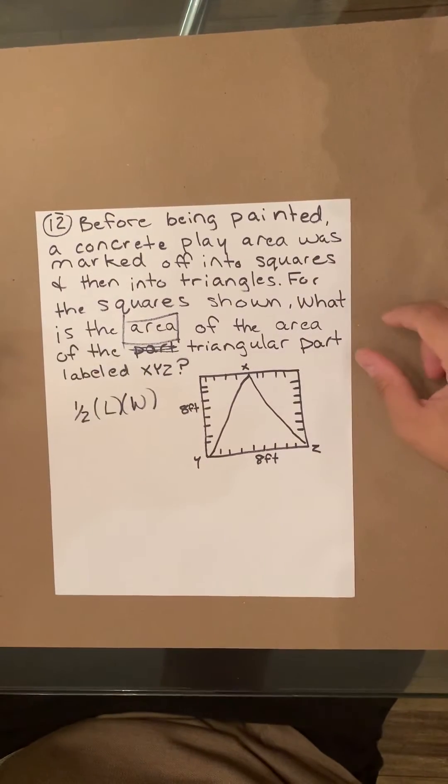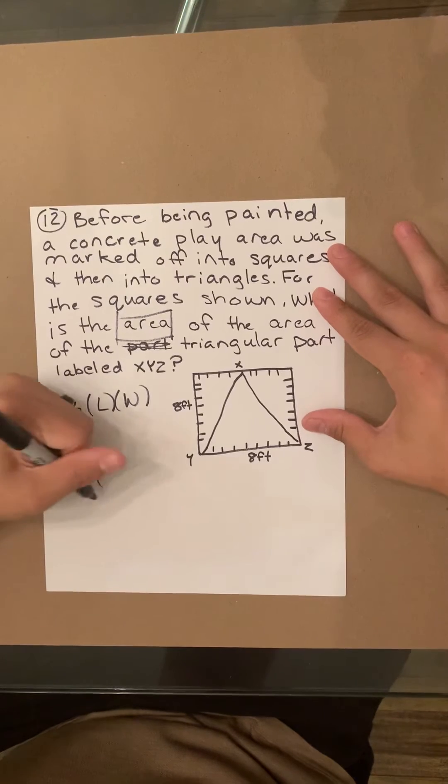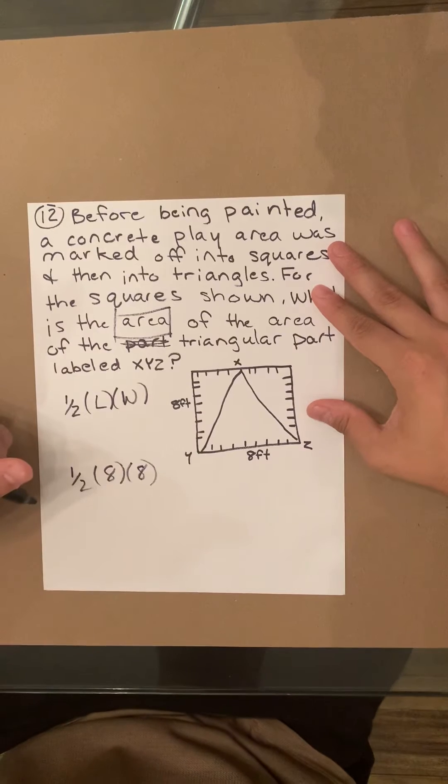It's a little weird because it's a triangle, right? But basically, it's going to be half times eight times eight.